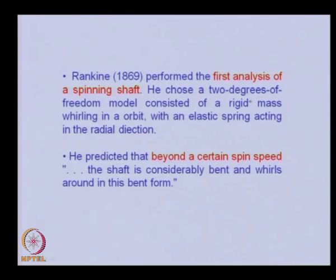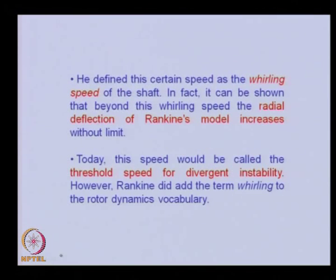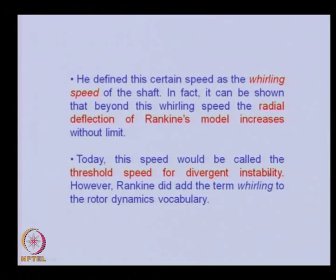Rankine predicted that beyond a certain spin speed, the shaft is considerably bent and whirls around in its bent direction. He defined this speed as the whirling speed of the shaft. It can be shown that beyond this whirling speed the radial deflection of Rankine's model increases without limit — it goes to an unstable region. Today this speed would be called the threshold speed of divergent instability. However, Rankine did add the term 'whirling' to the rotor dynamics vocabulary.